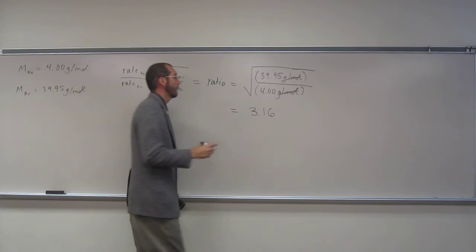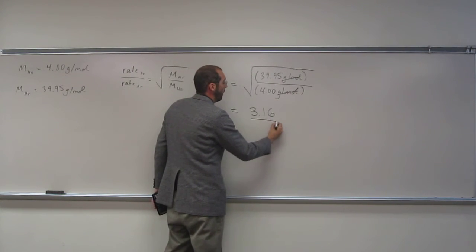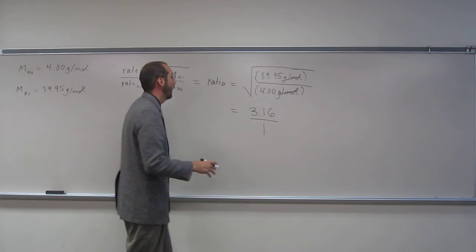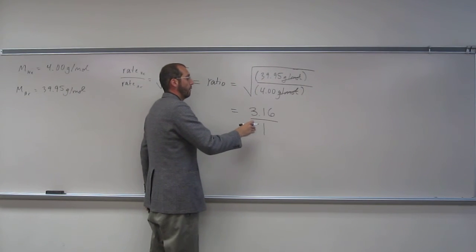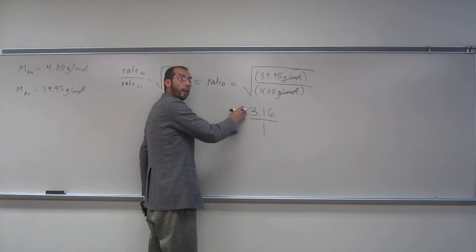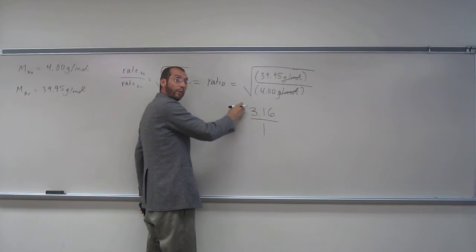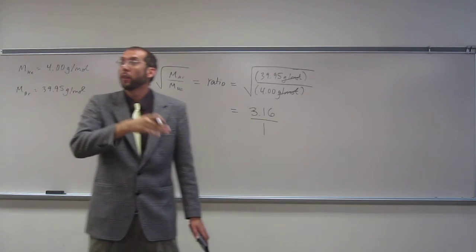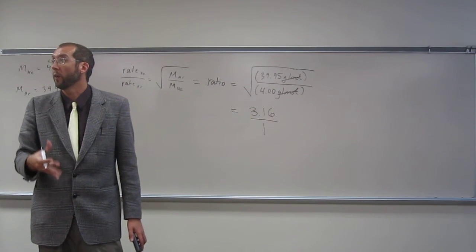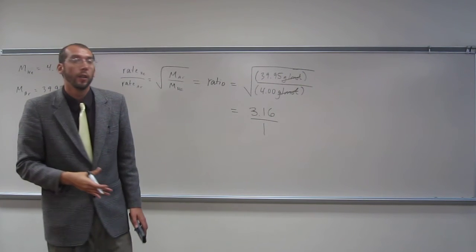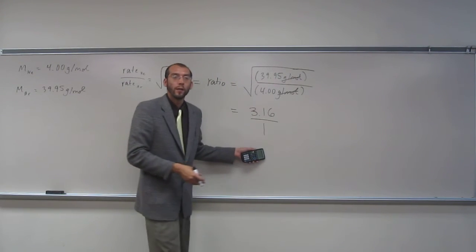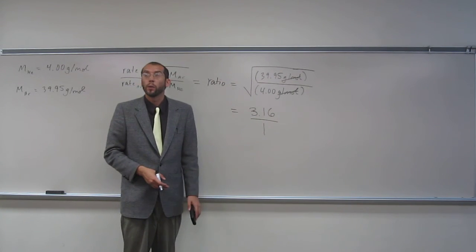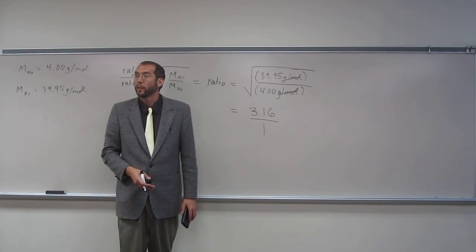So what is that telling us? So really it's a 3.16 to 1 ratio. Does everybody understand what I'm saying here? Where I'm saying that helium's rate of effusion is 3.16 times faster than the rate of effusion of argon. Does that make sense? So if argon's rate is 1, whatever units we're using, helium's is going to be 3.16.